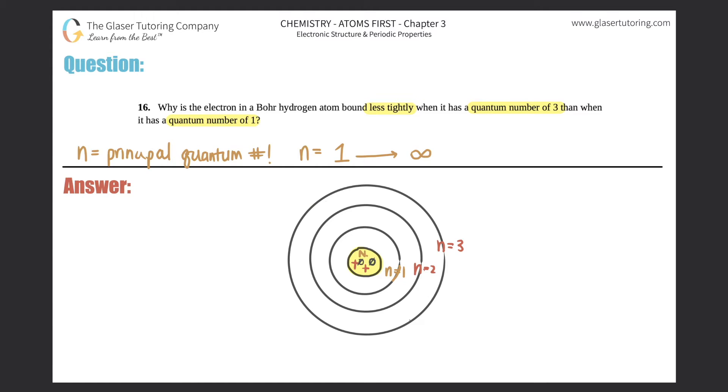So let's just put this into context. Let's just say that we have an electron here in n equals three, because they're asking for a quantum number of three versus a quantum number of one. So that means that the other electron that we're trying to compare is right in the first circle.